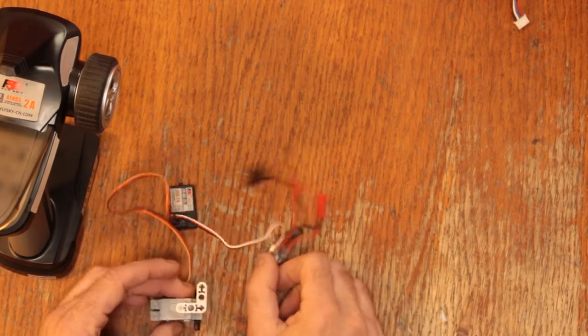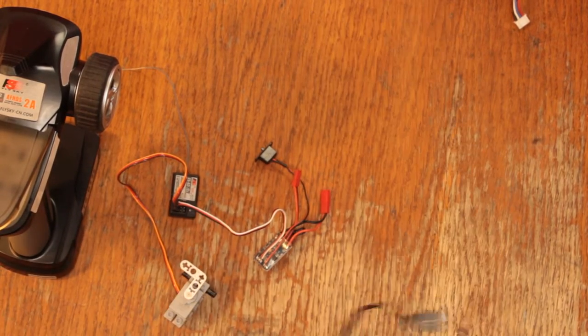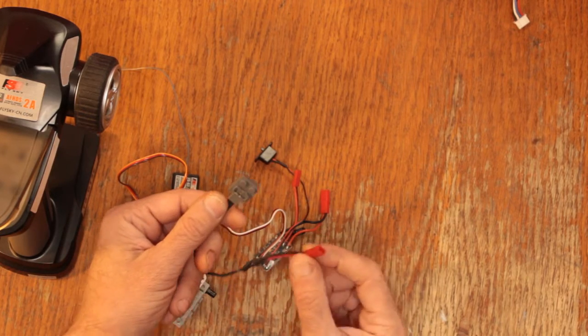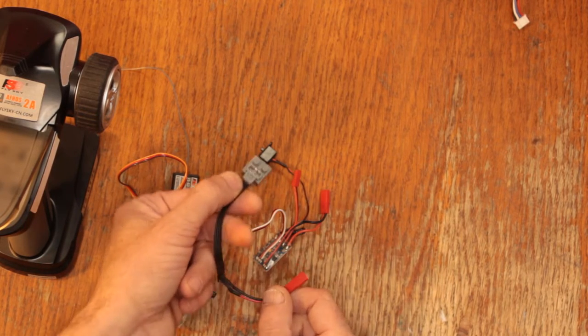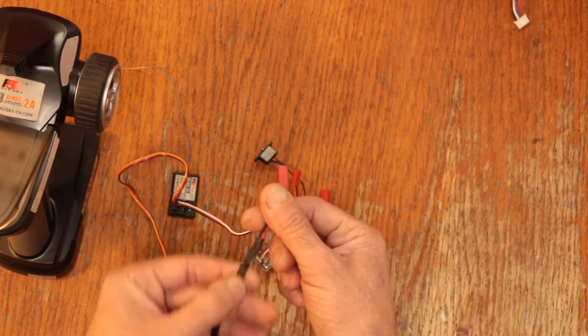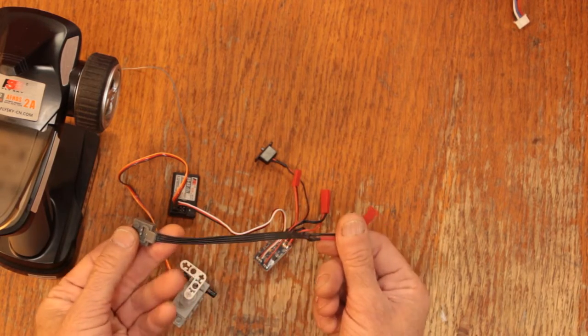So now we've got a servo and our ESC here. Now you're going to need to make an adapter for your LEGO so here I have a JST cable and a LEGO harness.